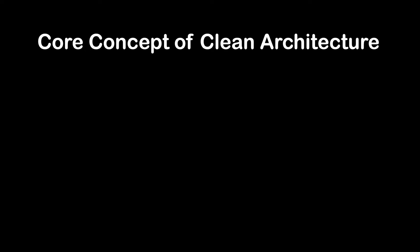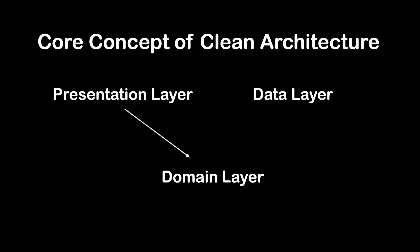Next comes the core concept of Clean Architecture, which is three rules for dependencies between the layers. First rule: the Presentation Layer depends on the Domain Layer. The Presentation Layer interacts with the Domain Layer through interfaces or abstractions provided by the Domain Layer. This allows the business logic to be decoupled from the Presentation Layer. Second rule: the Domain Layer is independent of other layers. The Domain Layer contains the core business logic and should not have any dependencies on external frameworks, libraries, or UI-related components.